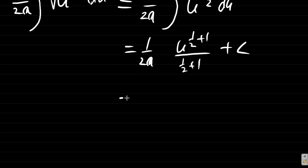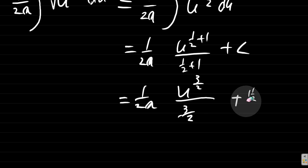So what you have now is 1 over 2a, u to the half plus 1 is 1 and a half. We want it as an improper fraction: 1 and a half, 3 over 2, divided by 3 over 2 plus c.